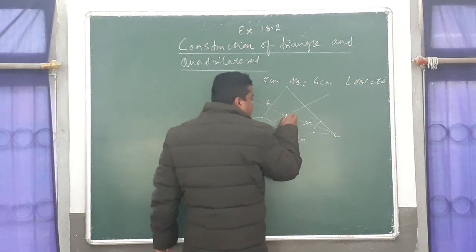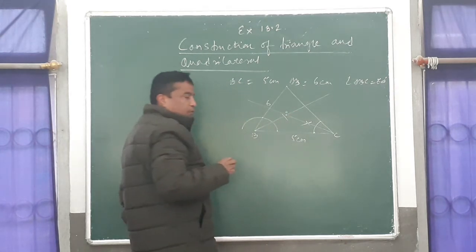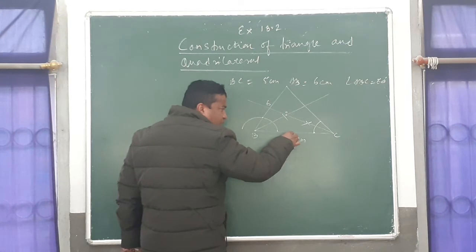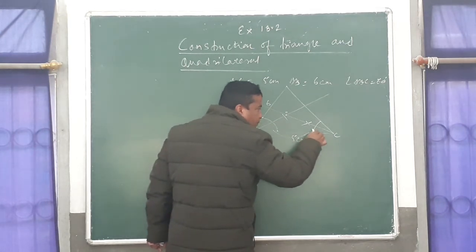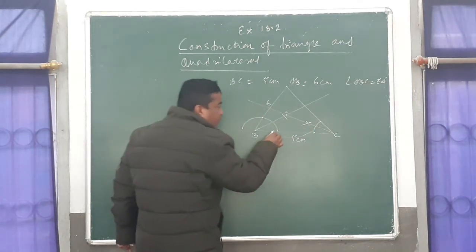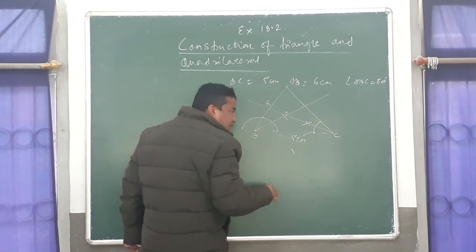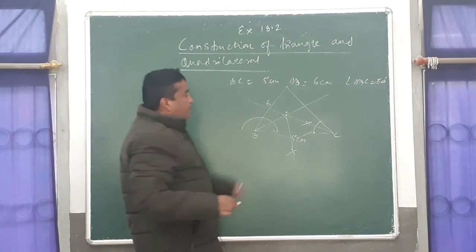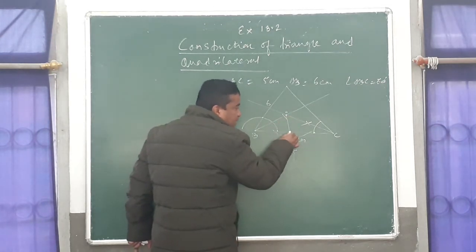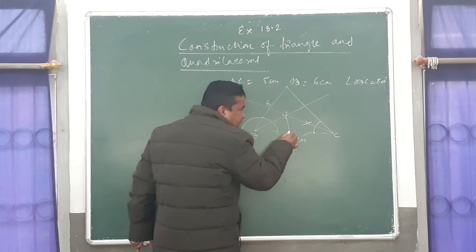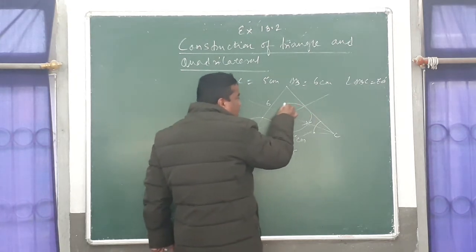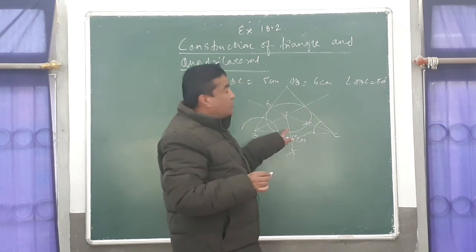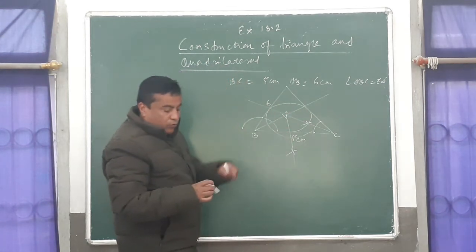Whenever the intersection point comes, write O. From here take a slightly longer radius and draw another arc. For the incircle, this is very important — from here with the same measurement, bisect it and join it. This is called perpendicular bisection. From this point, mark the radius and draw a circle. The circle has to touch all the sides inside the triangle. This is called the incircle.